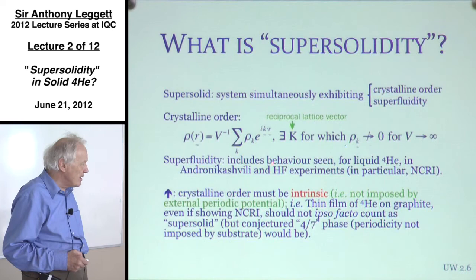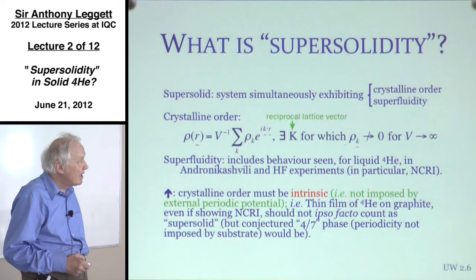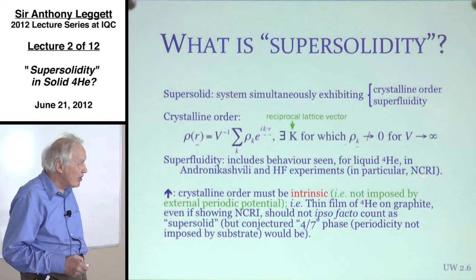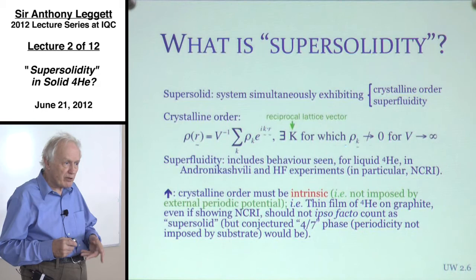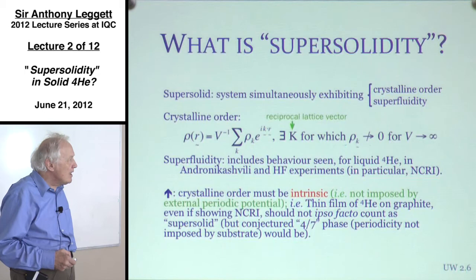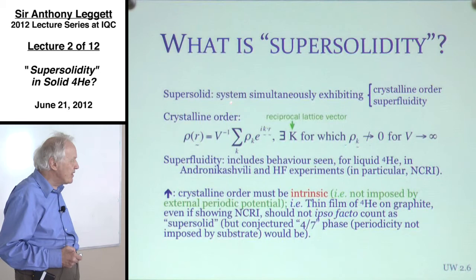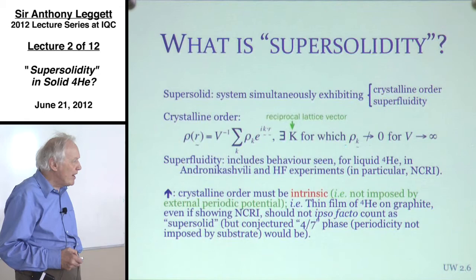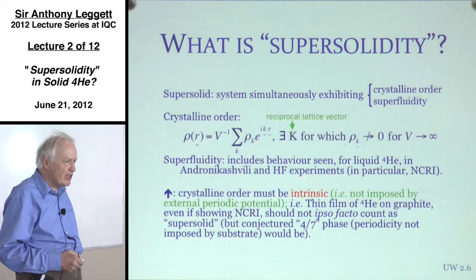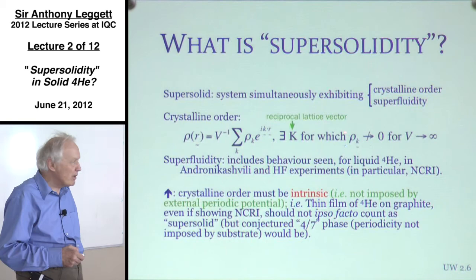Genuine total superfluidity should include the behavior seen both in the Andronikashvili experiment and in the Hess-Fairbank experiment — in particular showing the phenomenon of NCRI, this coming out of equilibrium with the boundary conditions. However, some implicit definitions of superfluidity in recent literature are less stringent. Some people would say that if you see the Andronikashvili effect but not the Hess-Fairbank effect, that still counts as superfluidity — though that is really a matter of convention and definition.